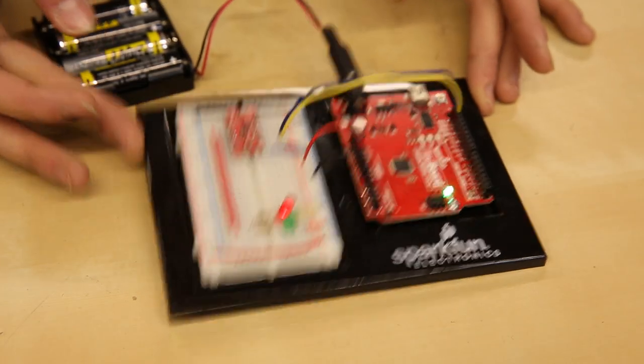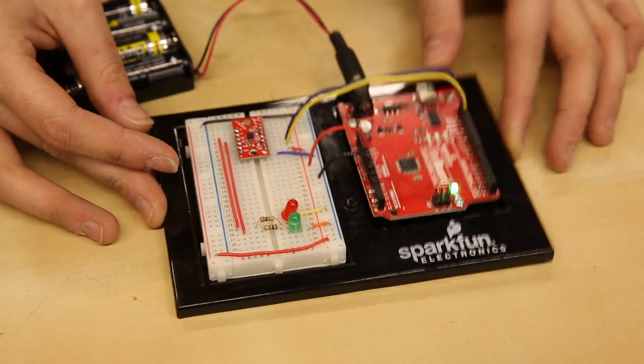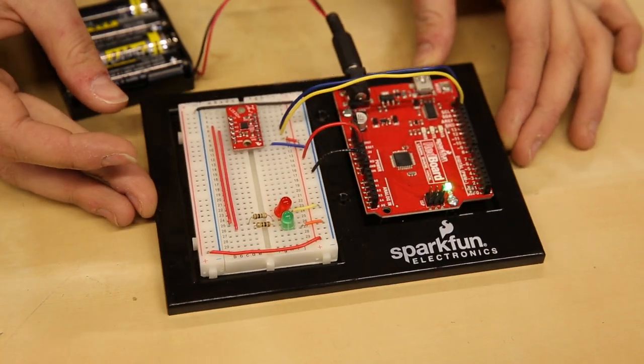To get started with the LIS-3DH, you will need a breadboard, some jumper wire, and a SparkFun redboard or another Arduino compatible board.